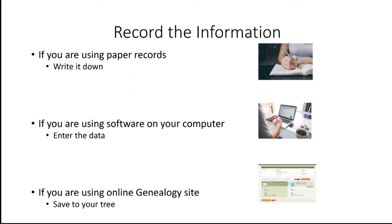So what do you do with this information? If you're keeping only paper records, write down the result and the citation. If you're using software on your computer, write down the results and citation and enter them into your software. If you're using an online genealogy site for your tree, you will be given an opportunity to add the search result to your tree. The citation will automatically be included.